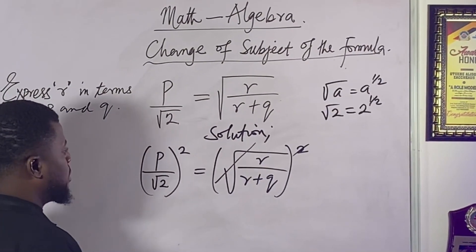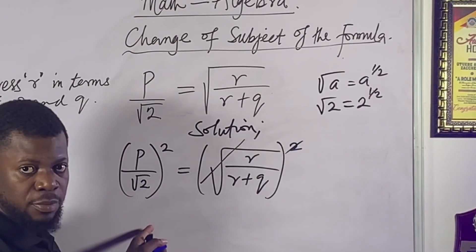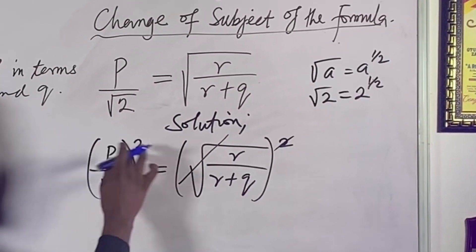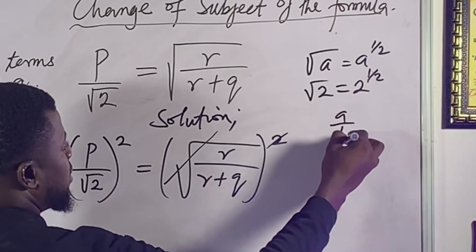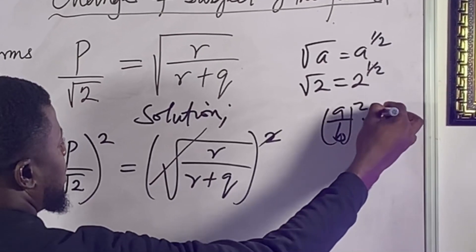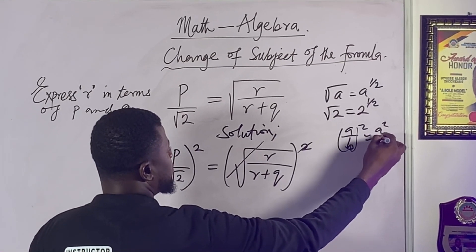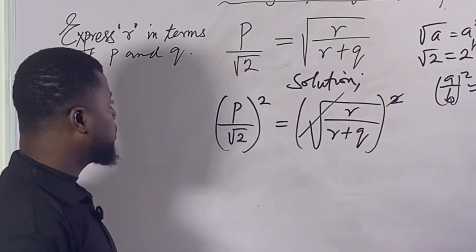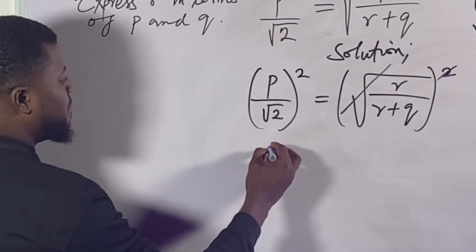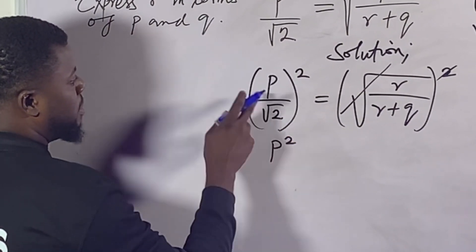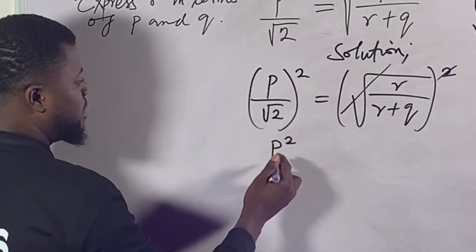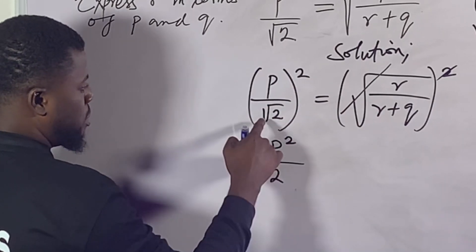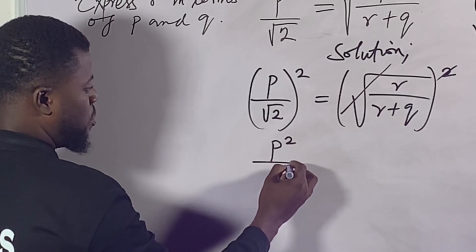So if you have the square root of 2, you can transform it to 2 to the power of one-half. Now, when you have something squared — for example, a over b, all squared — it's the same as a squared over b squared. Applying that here, we should have p squared on top, and on the denominator we have 2 to the power of one-half, which becomes one-half.